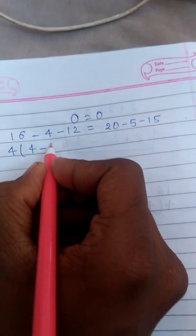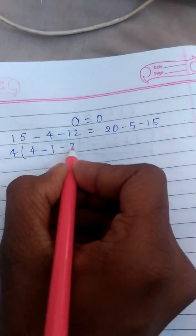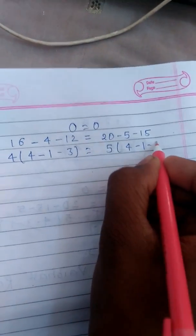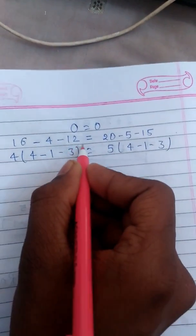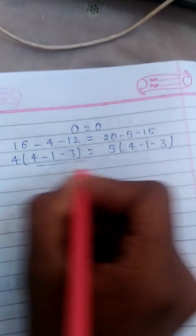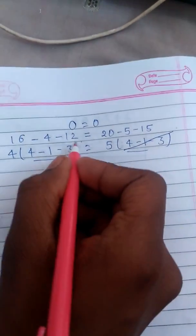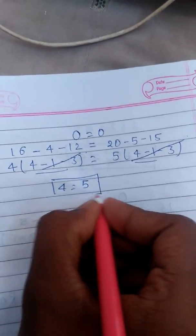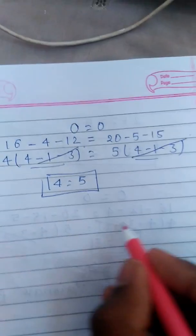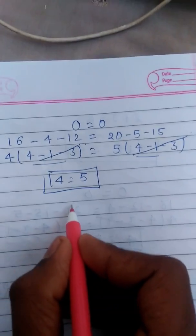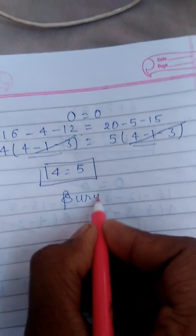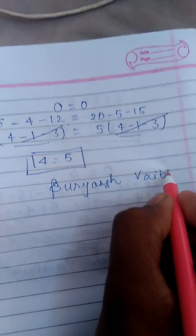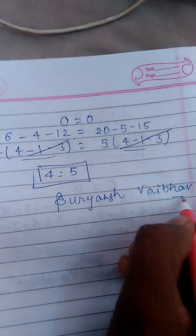times 4 minus 1 minus 3, and 5 times 4 minus 1 minus 3. Here both are the same thing, so this will be cancelled. Now here will come 4 equals 5. Thanks friend, my name is Bunyaah Vaibhav.